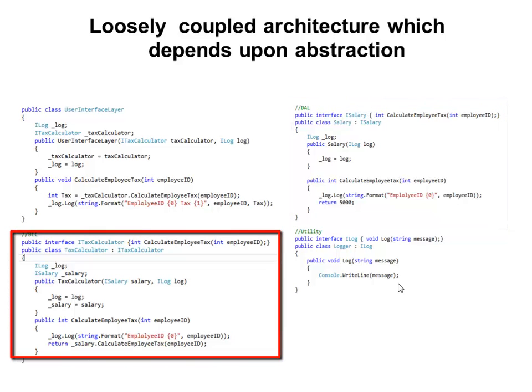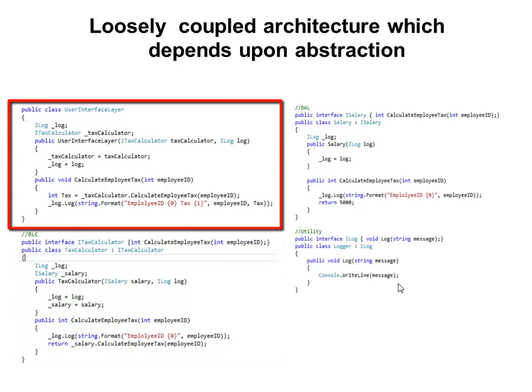I have also defined an interface called iTaxCalculator with one method called CalculateEmployeeTax taking employee ID as an integer. TaxCalculator implements iTaxCalculator. Since TaxCalculator previously had two dependencies — Salary and Log — both dependencies are now passed to TaxCalculator through its constructor. Once the constructor initializes the dependencies, CalculateEmployeeTax uses them. In the previous example, the user interface layer had a hard dependency on the business logic and logging components. Both dependencies are now passed through the constructor of the user interface layer, and CalculateEmployeeTax uses them to get the employee tax and log information.